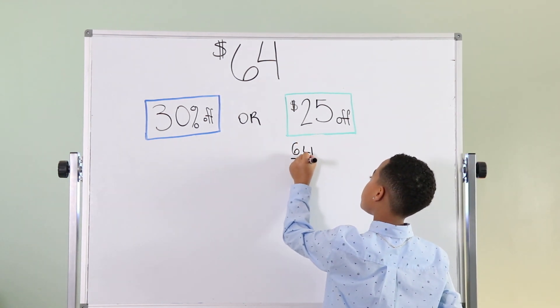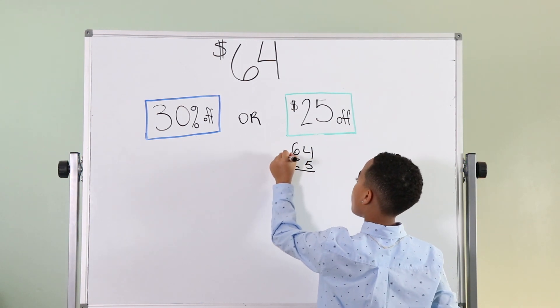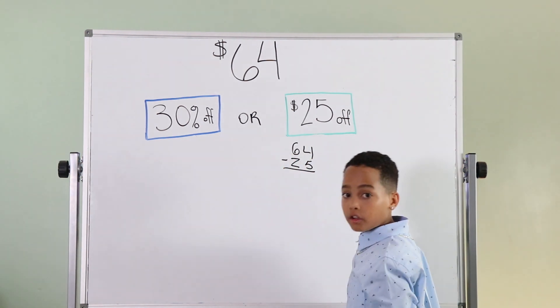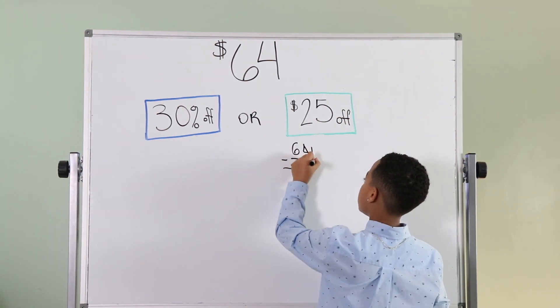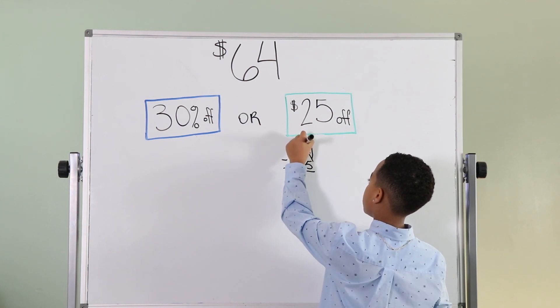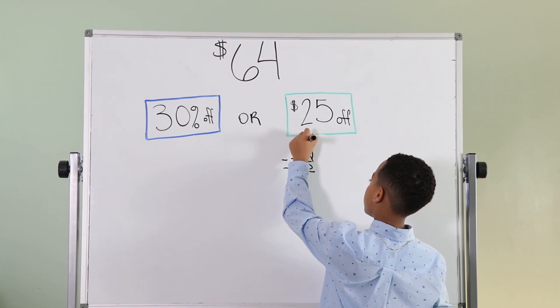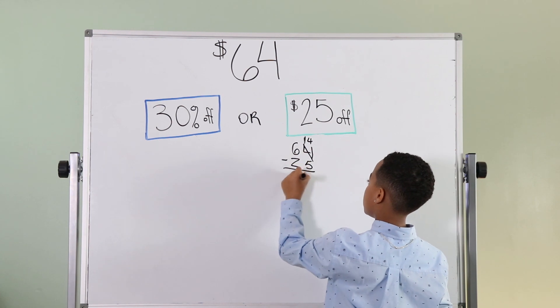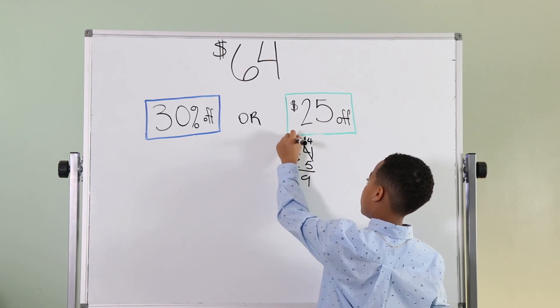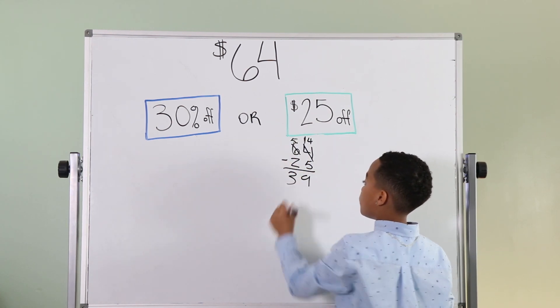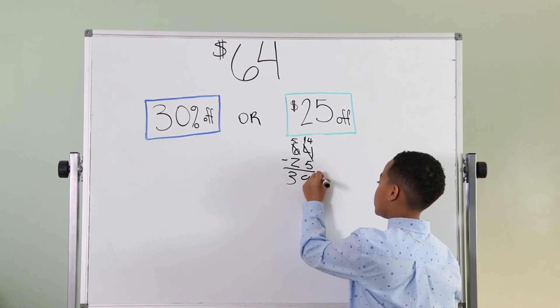So, if we have a coupon is $25 off, we're going to subtract $64 and $25. So, the answer is $39.